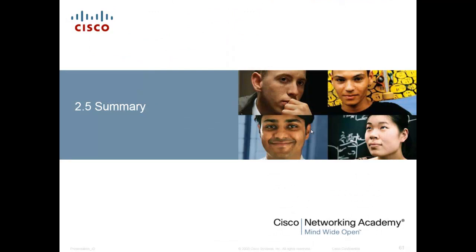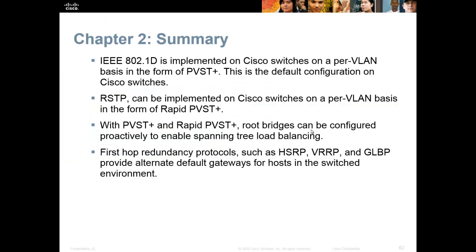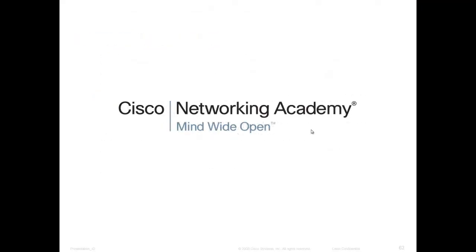To summarize: IEEE 802.1D is simply spanning tree protocol. Spanning tree protocol comes in multiple flavors — rapid spanning tree, and rapid per-VLAN spanning tree which is what Cisco supports. Then we have our first hop redundancy protocols: HSRP, VRRP, and GLBP. If you have any questions on how the root bridge is elected, what command turns things on, or anything else, bring them to class and ask before the lab starts.